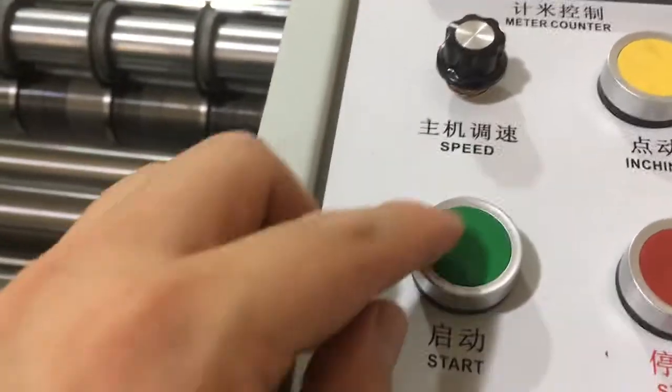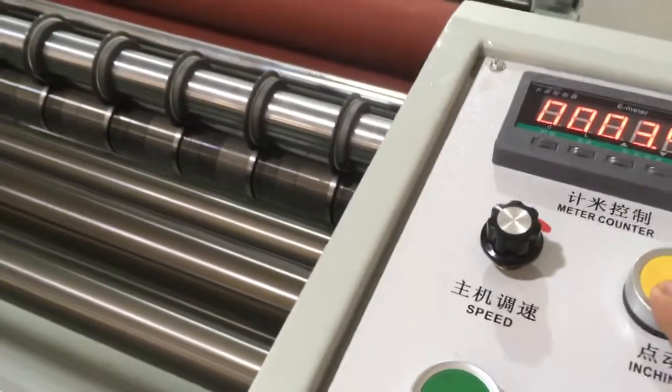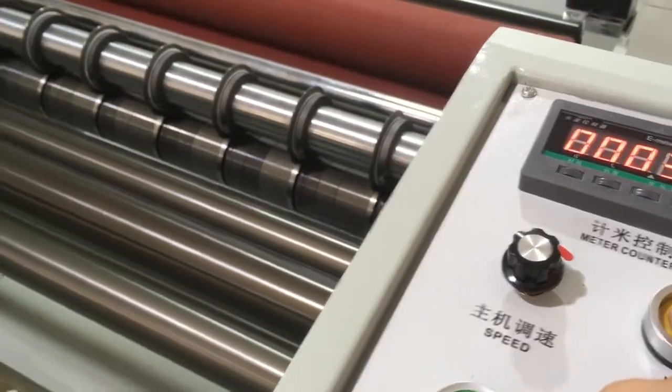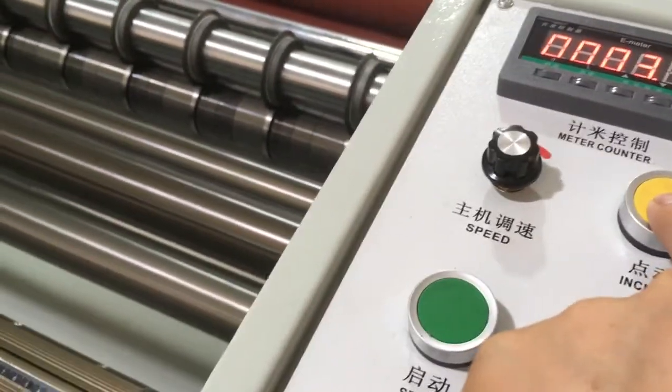This can adjust the speed of slitting and rewinding. Inch. For example, you can press inch. When you press it, it moves. When you release it, it will stop.